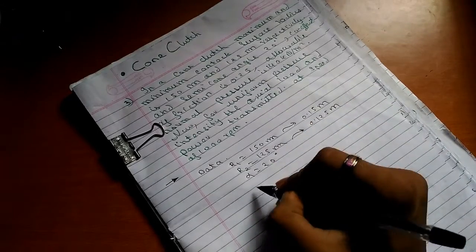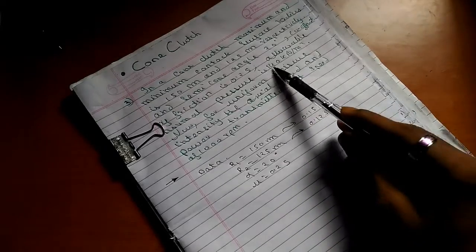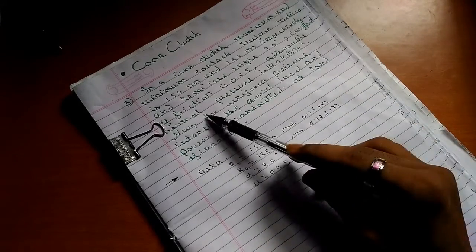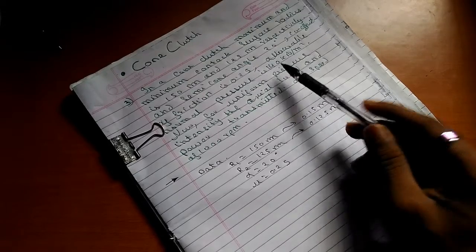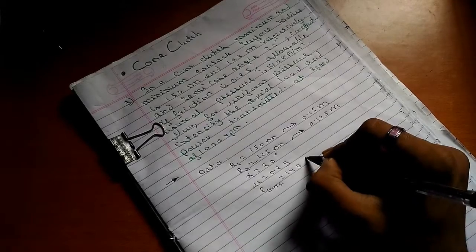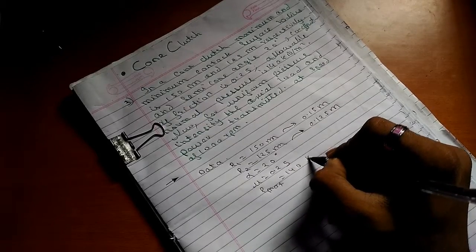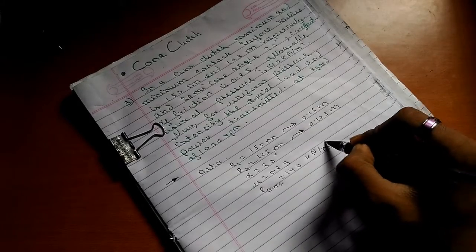Coefficient of friction mu equals 0.25. The allowable normal pressure P max equals 140 kN per meter square.